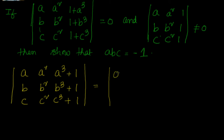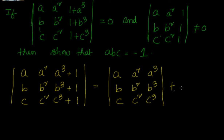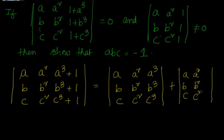You can write it as the determinant of (A, A², A³), (B, B², B³), (C, C², C³) plus the determinant of (A, A², 1), (B, B², 1), (C, C², 1). This is a property of determinants.